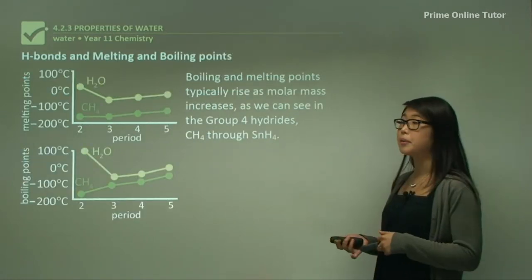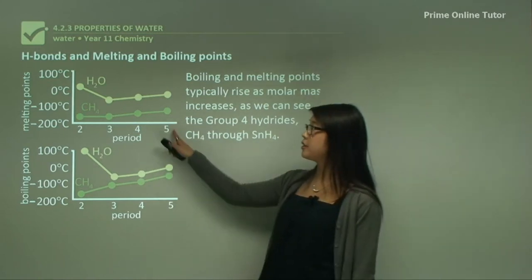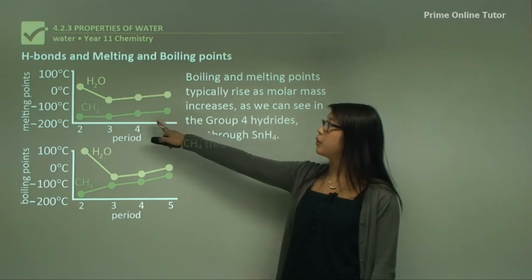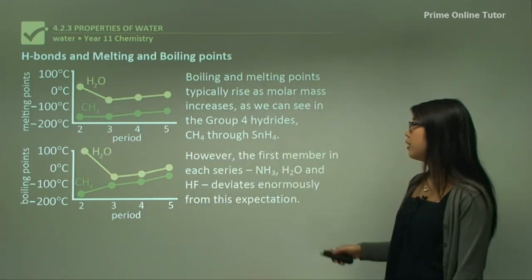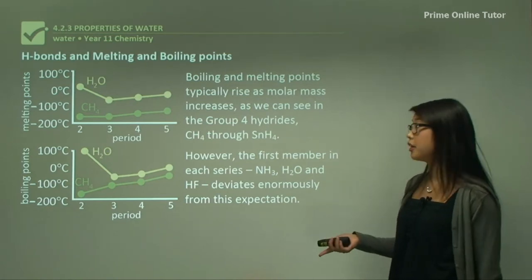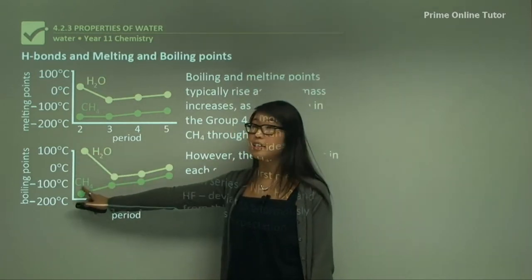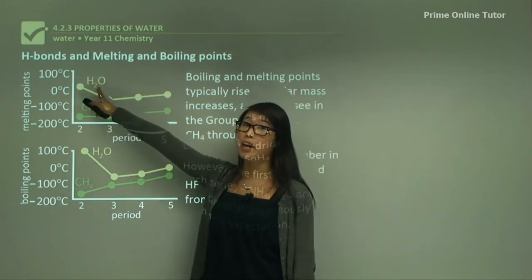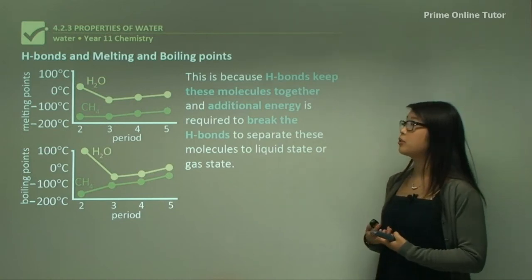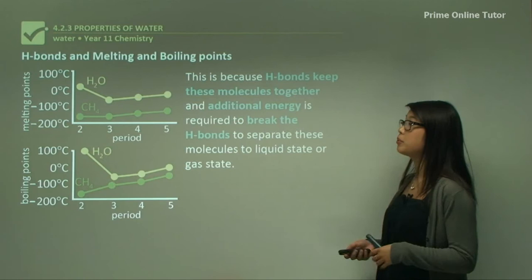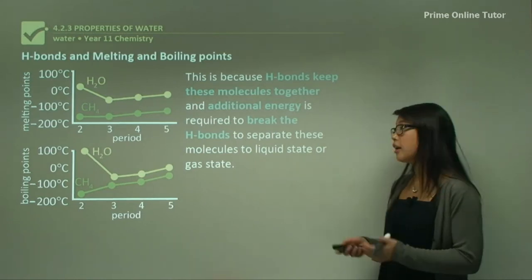Hydrogen bonds are also important in melting and boiling points. Boiling and melting points typically rise as we increase molar mass, as we can see in the graphs. But the first member of each series tends to be very different. Water doesn't follow the trend — if it did, it should sit much lower, near CH₄. Instead it's quite high, even higher than the last member of the series. This is because water has hydrogen bonds that keep the molecules together, requiring more energy to break them. Breaking hydrogen bonds allows the transition from solid to liquid, and further breaking takes it from liquid to gas.